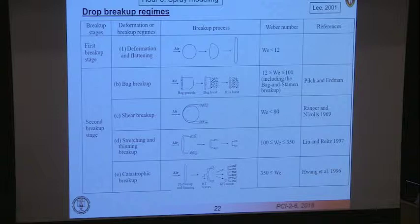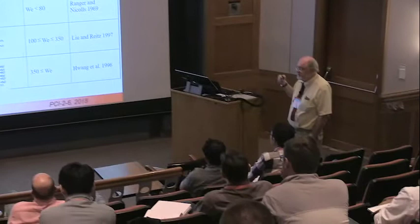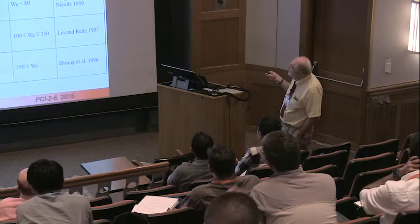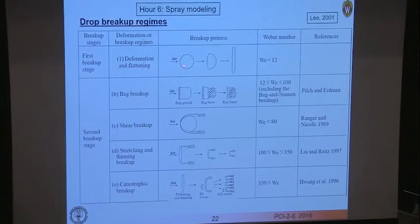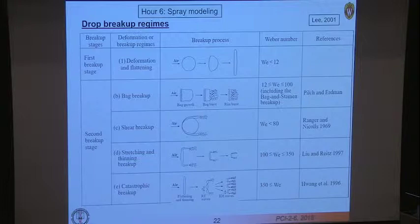Once droplets are injected, they can break up depending on parameters — there are many different droplet breakup regimes. At low Weber numbers (low gas density), the droplet just distorts, deforming from a sphere to a disk. As you increase the Weber number, the droplet can break up into various modes. Many researchers over the years have studied different breakup regimes.